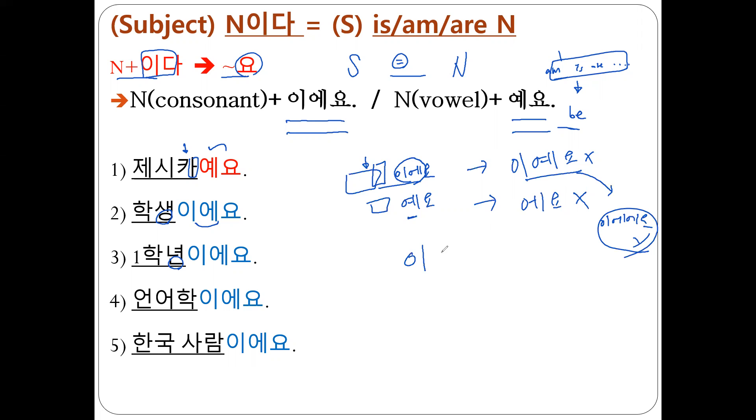Only we have 예요. Only we have 이에요. And then, if you didn't catch, based on this role, when the nouns, think about the nouns condition, and when you write, you have to write correctly. Write what? The correct 예요. You choose, write one, choose one between 이에요 and 예요.